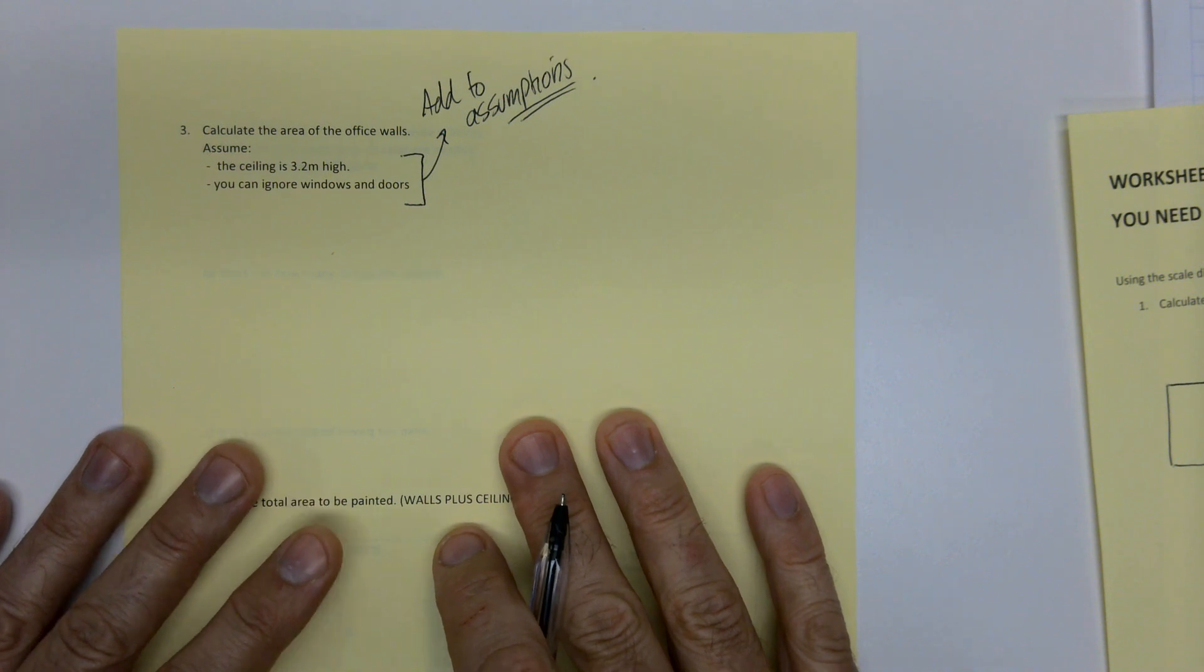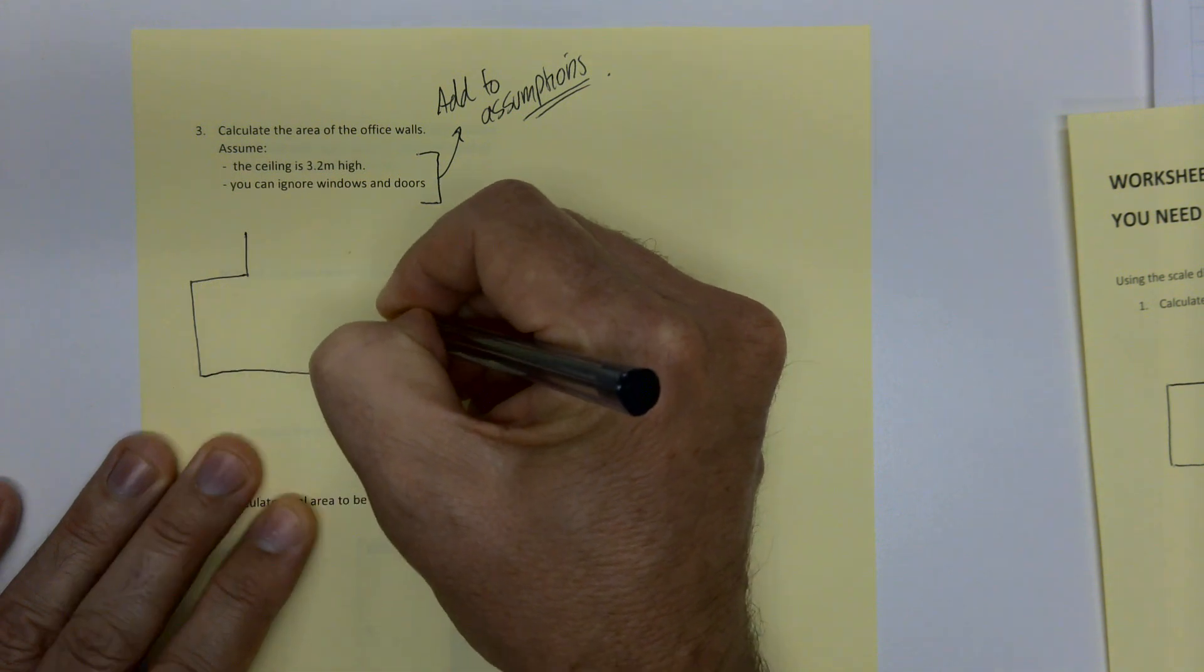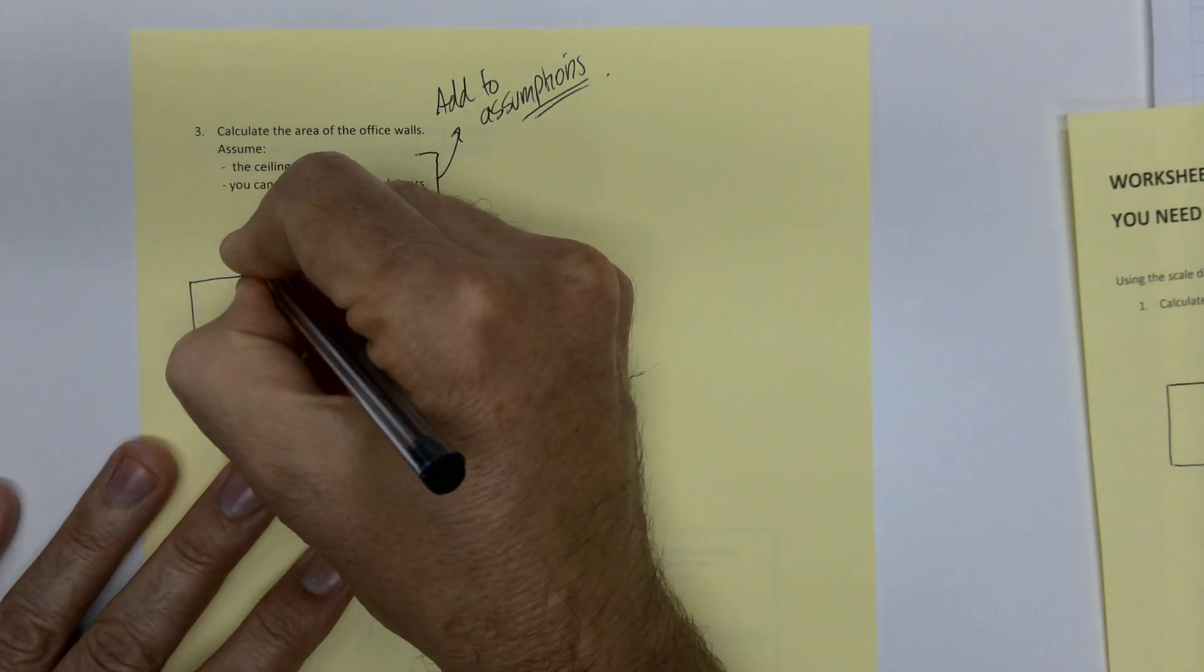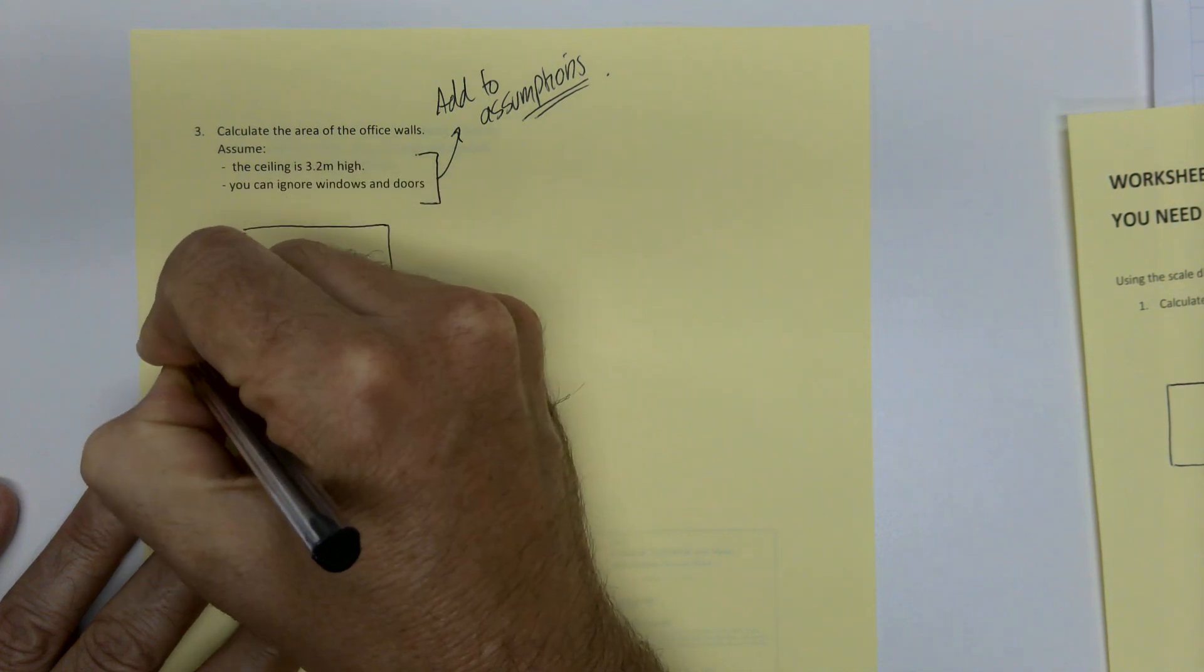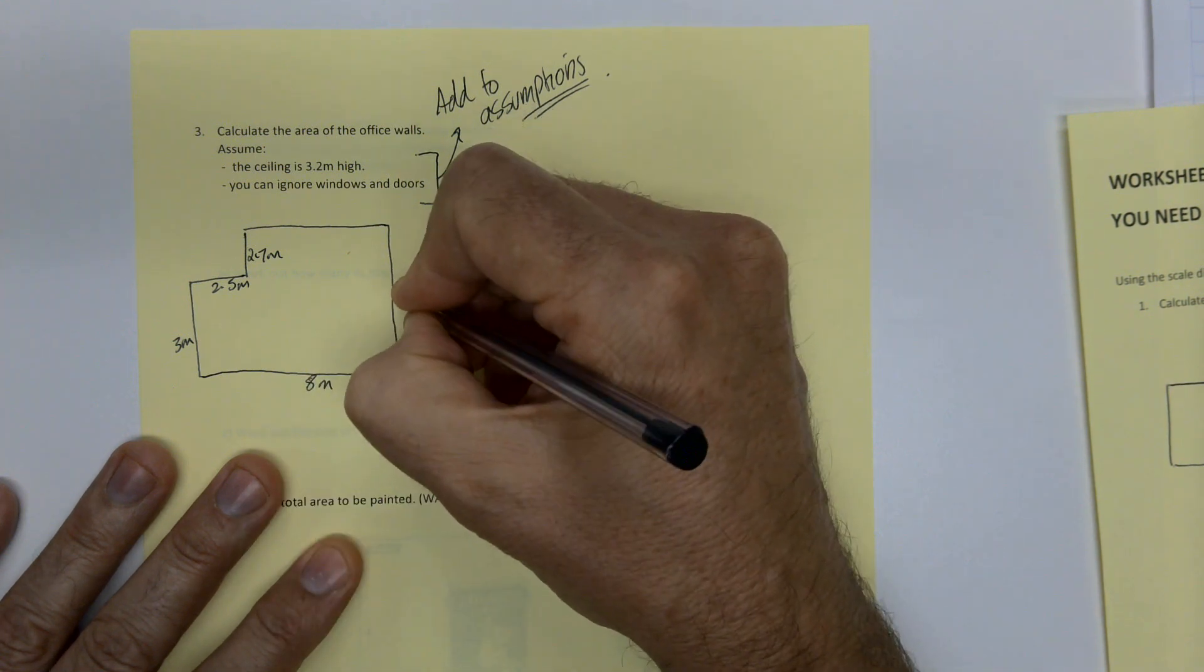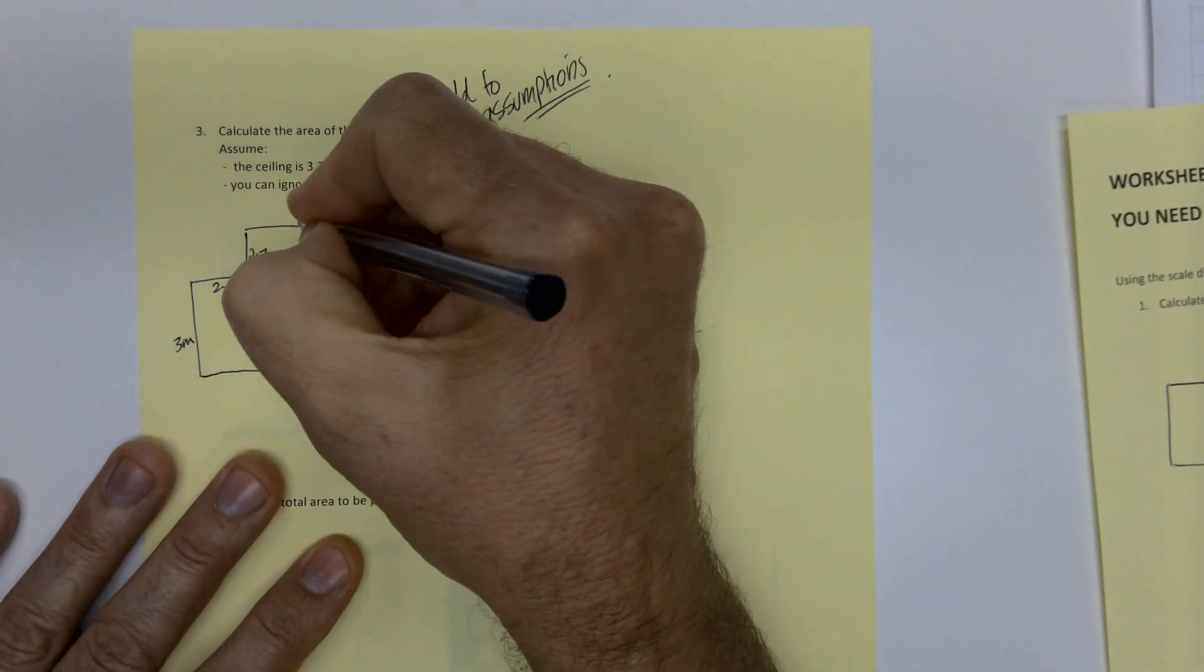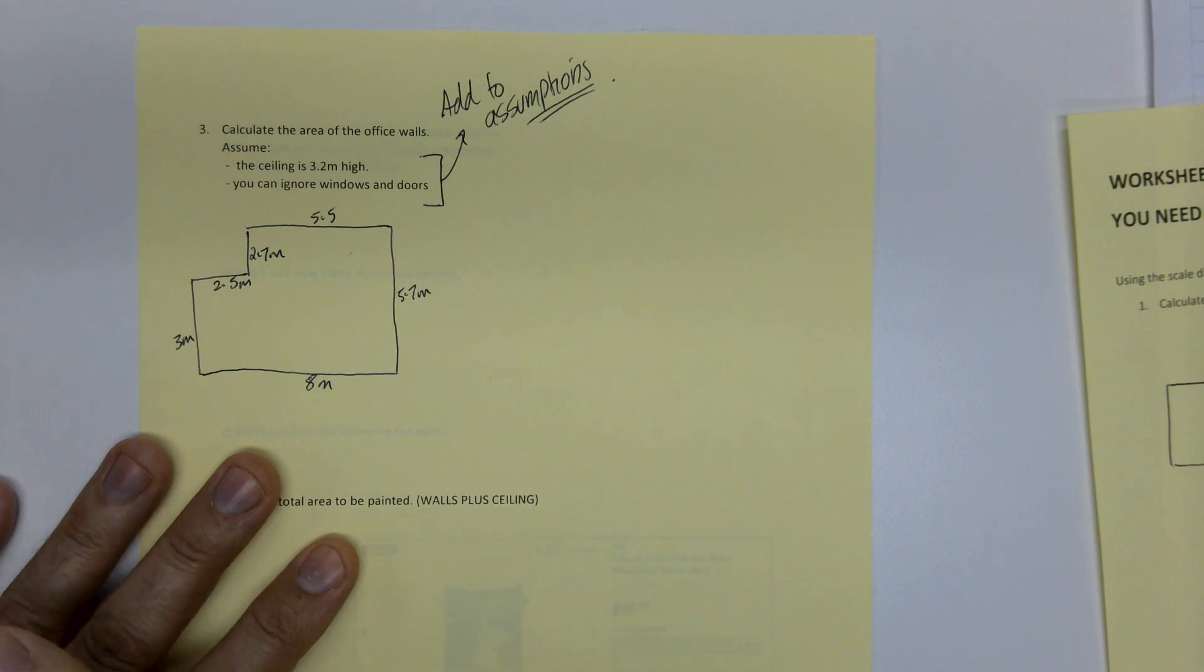So first of all, if you're thinking about it, let's just redo the office space again. So it kind of looks like that. I'm just going to, that's 2.7, 2.5. That's three meters, eight meters, and this whole length here is 5.7 meters. And hang on on the top. There's 5.5. So that's the space.